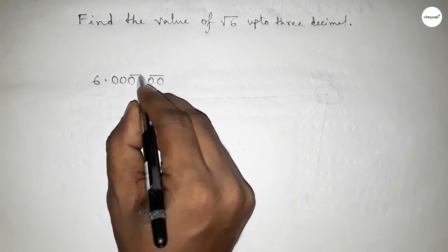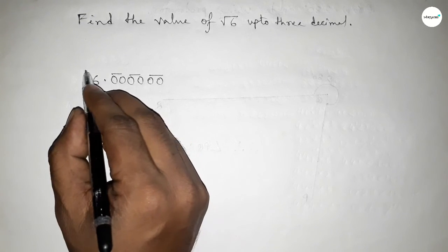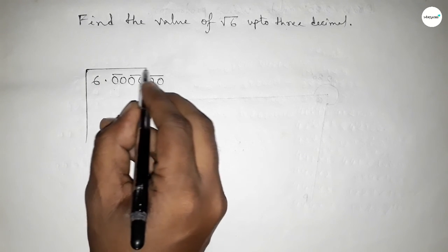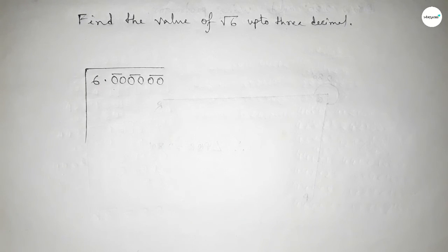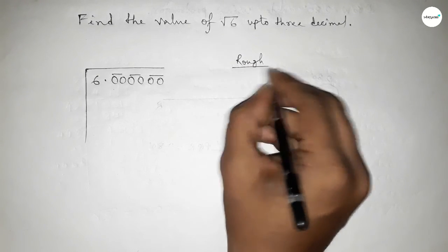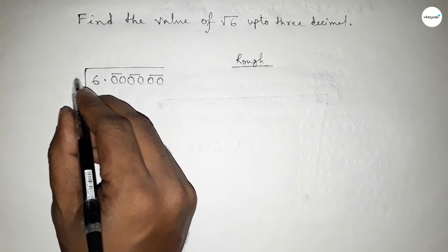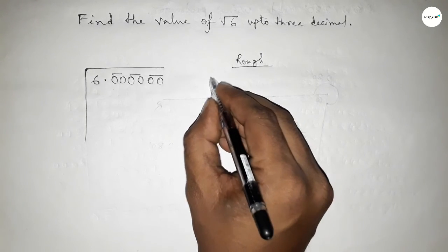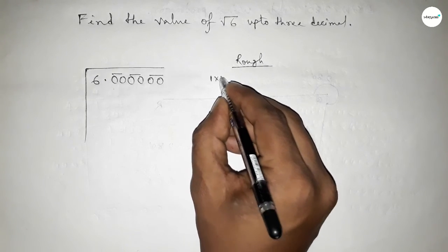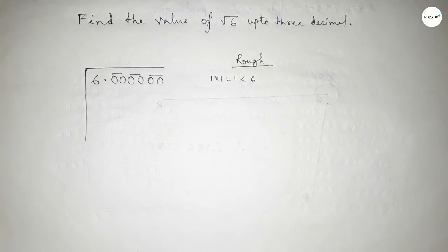Making them as pairs — here we have 3 pairs. Drawing the division symbol and here some rough space. Now what should we put here, multiplying that number which is less than 6.